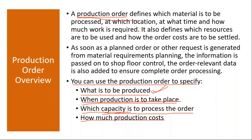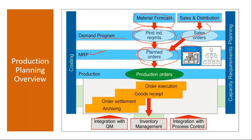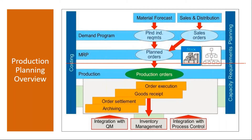The production order specifies which capacity — your machines and work centers — is to process the order, and how much production cost is involved. This is the overall flow: we entered the forecast into the system in demand management using PIR, and from the Sales and Distribution module you receive sales orders. When MRP is executed and there is no sufficient stock, the system generates planned orders. We have covered the planning part; now we are starting the execution part — production order execution.